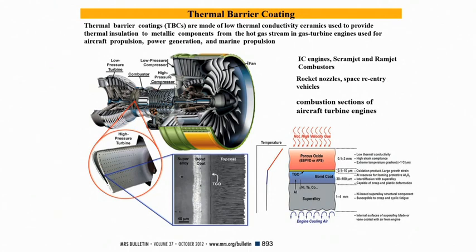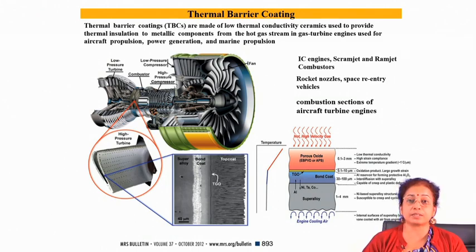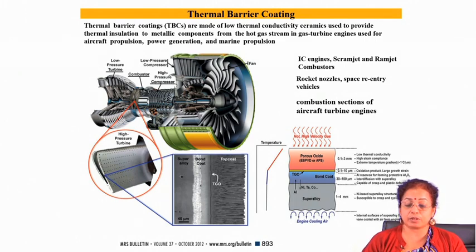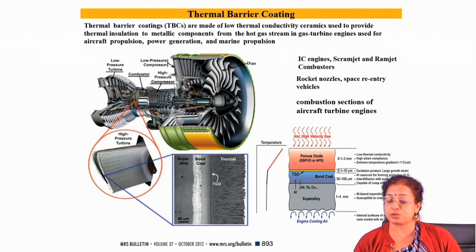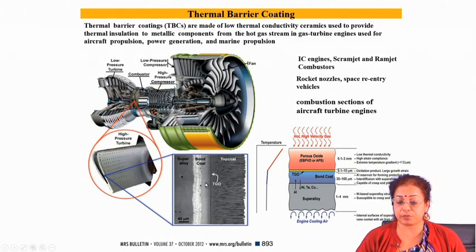Thermal barrier coating is usually applied on turbine blades and nozzles where you are looking for very high temperature oxidation resistance property. You look for a thick ceramic layer on the surface of the substrate, which is nothing but superalloys — maybe nickel-based or cobalt-based superalloys. That coating is developed onto the surface of the superalloy, and before that you apply a very thin bond coating made of CoNiCrAlY, which offers high temperature oxidation resistance. That oxide-based ceramic acts as an insulating barrier for reducing the effective operating temperature of the substrate.